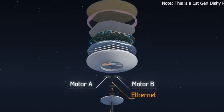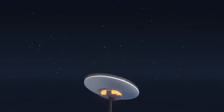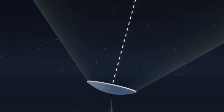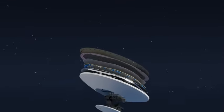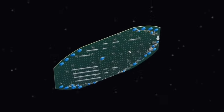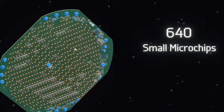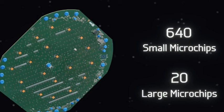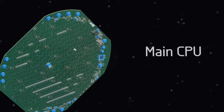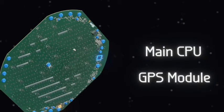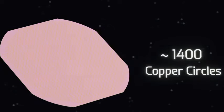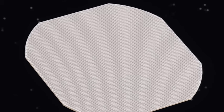Let's now open up Dishy McFlatface. At the back, we have a pair of motors and an ethernet cable that connects to the router. Note that these motors don't continuously move Dishy to point directly at the Starlink satellite. They're used only for initial setup, to get the dish pointed in the proper general direction. Opening up Dishy, we find an aluminum structural backplate, and on the other side, we find a massive printed circuit board, or PCB. One side has 640 small microchips and 20 larger microchips, organized in a pattern with very intricate traces, fanning out from the larger to smaller microchips, along with additional chips including the main CPU and GPS module on the edge of the PCB.